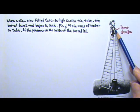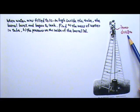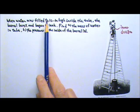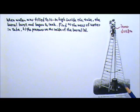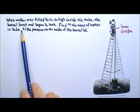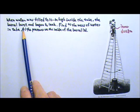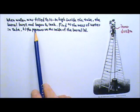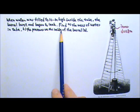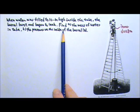Suppose the tube has an inner diameter of 0.8 cm. And when water was filled to 10 m high inside the tube, the barrel burst and began to leak. Find the mass of water inside the tube the moment before the barrel burst. Find the pressure on the inside of the barrel lid the moment before the barrel burst.